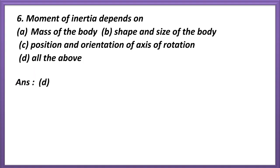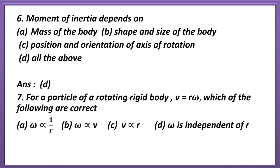Question 7. For a particle of a rotating rigid body, v = rω. Which of the following are correct? ω varies as 1/r; ω varies as v; v varies as r; ω is independent of r. The correct answer is option C and D: v varies as r, and ω is independent of r.